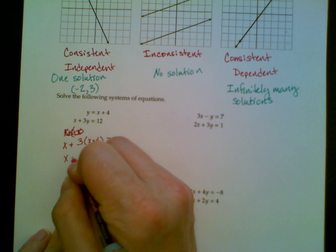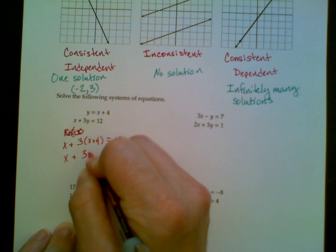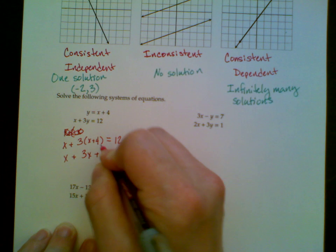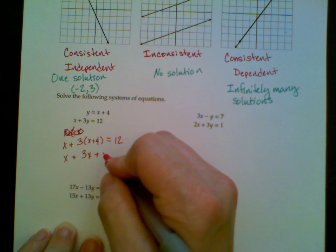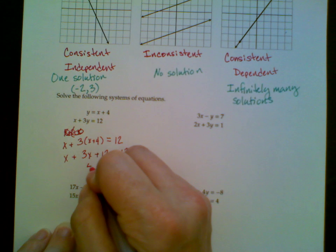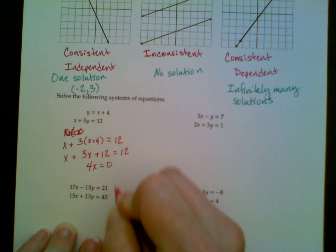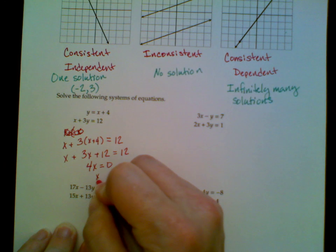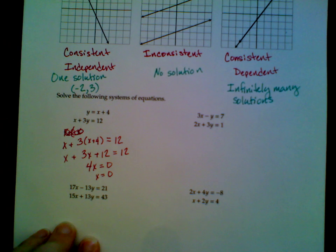I distribute this and get x plus 3x plus 12. I subtract 12 from both sides. I get 4x equals 0. Divide both sides by 4, and I get x is equal to 0.